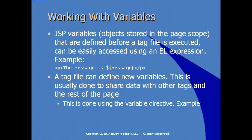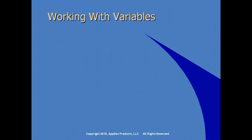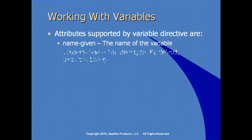In order to do this, we use the variable directive. For example, you specify the name given and the variable class — a good example is using a JavaBean. Attributes supported by the variable directive are name given and variable class, which is the data type. By default, if you don't specify this, the data type is considered to be String.